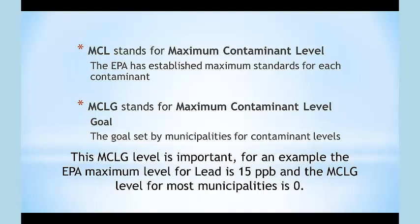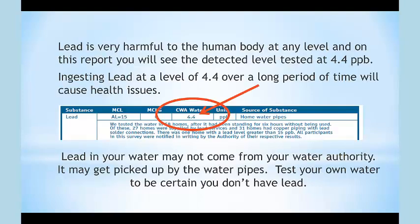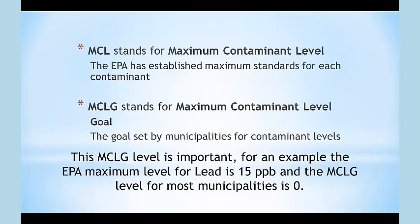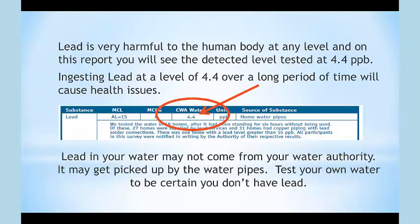The MCLG is important. For example, the EPA has a maximum level for lead at 15 parts per billion, and the MCLG level for most municipalities is zero, because lead is very harmful to the human body at any level. On this report, you'll see the detected level at 4.4 parts per billion, and ingesting lead at a level of 4.4 over a long period of time will cause health issues.